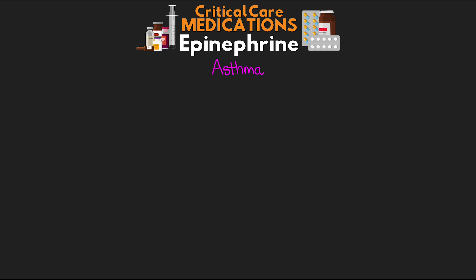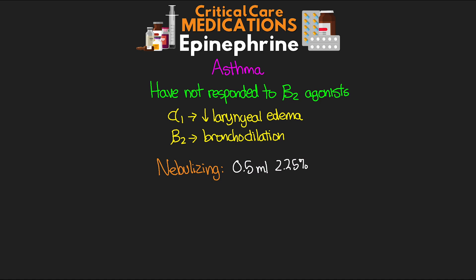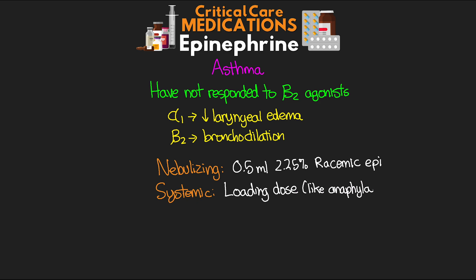Epi can be used for asthma when patients really haven't responded to our other beta-2 agonists. The benefit of epi here is twofold: because of the alpha-1 activation we see a reduction in laryngeal edema, and due to the beta-2 activation we see bronchodilation. There are a couple of approaches. The first is nebulizing, just like for stridor — 0.5 mLs of the 2.25% racemic epi. Alternatively, we can use a systemic epinephrine dose, considering a loading dose like with anaphylaxis and then perhaps a continuous dose of 5 mcg per minute, titrating to effect as needed.